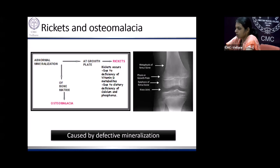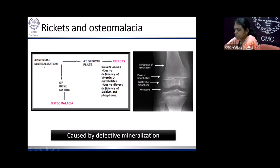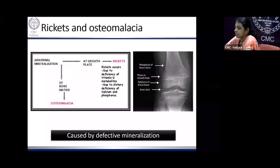Rickets and osteomalacia are very common terms. To put it simply, these are mineralization defects. Rickets is associated with children and osteomalacia with adults. Rickets consists of abnormal mineralization of the growth plate — the structure present only in children where bone accretion and increase in bone length occur. When the growth plate is not mineralized, rickets occurs and children develop deformities.